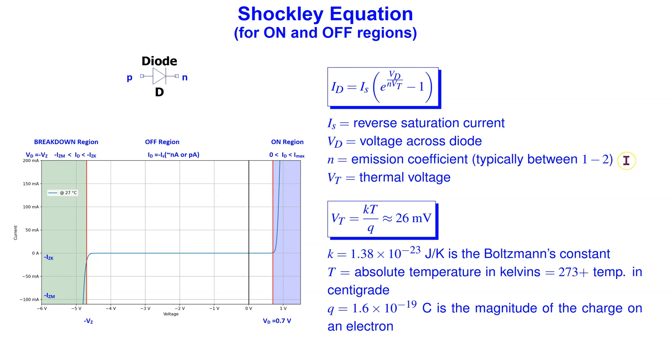N is the emission coefficient, typically between 1 to 2. VT is the thermal voltage, which has a value of around 26 mV at a nominal temperature of 27 degrees centigrade.